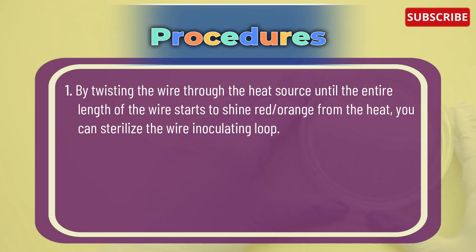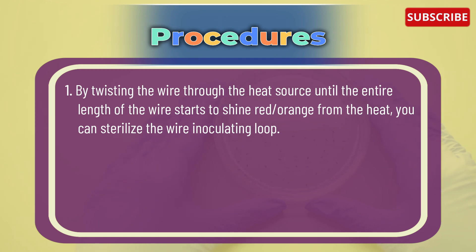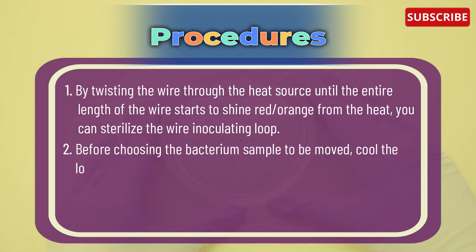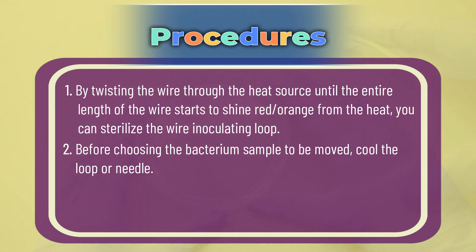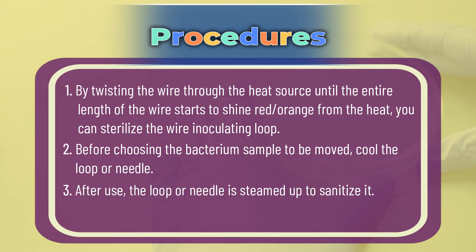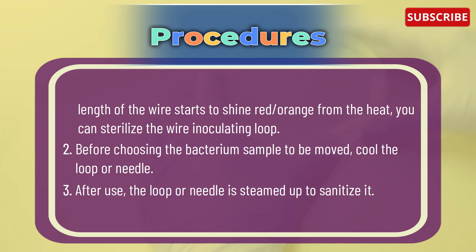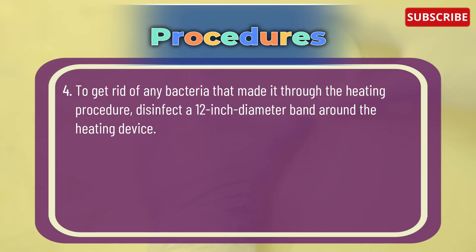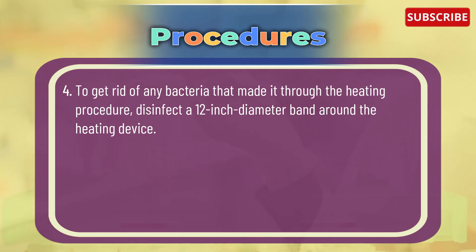Operating procedure: number one, by twisting the wire through the heat source until the entire length of the wire starts to glow red-orange from the heat, you can sterilize the wire inoculating loop. Number two, before choosing the bacterial sample to be moved, cool the loop or needle after use — the loop or needle is flamed to sterilize it. Number three, to get rid of any bacteria that made it through the heating procedure, disinfect a 12-inch diameter band around the heating device.